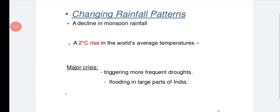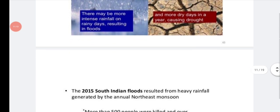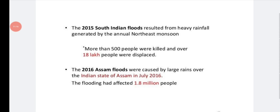There is changing rainfall pattern. Decline in monsoon rainfall. For example, we have seen this year only, there was decreased rainfall. A 2 degree Celsius rise in world's average temperature. Nowadays, it is seen in the news that temperature is rising. The major crises are triggering more frequent droughts and flooding in large parts of India. In central India, there will be drought and coastal area, there will be floods. So this is the crisis now we are facing. So precipitation will change. That will result in high floods and drought. So in 2015, South Indian floods resulted from heavy rainfall generated by the annual Northeast monsoon. And more than 500 people were killed and over 18 lakh people were displaced. So this we have seen in 2015. At 2016, Assam floods, there was huge people were affected, like 1.8 million people. This was there in the Indian state of Assam in July 2016.